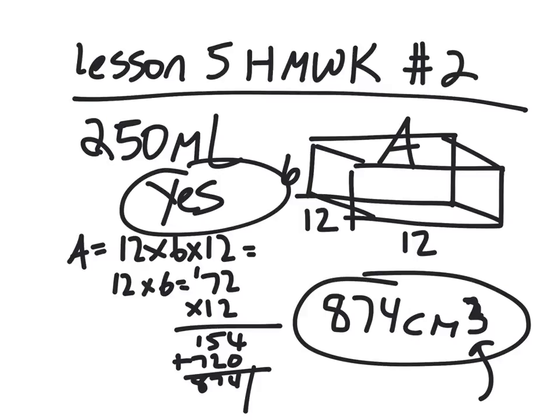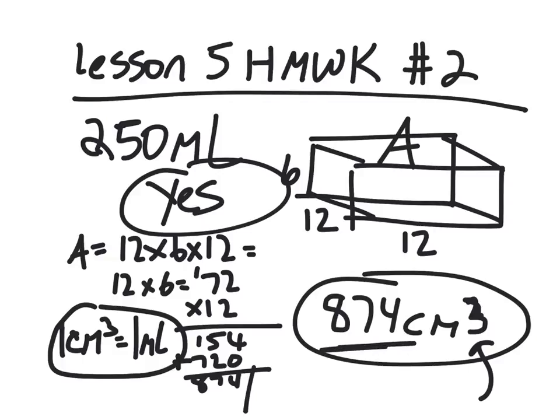The other thing we talked about today is one cubic centimeter is also equal to one milliliter. That was also a very important part of today's lesson. So if 874 cubic centimeters is equivalent to 874 milliliters, they're equivalent.